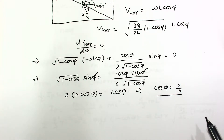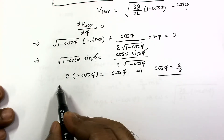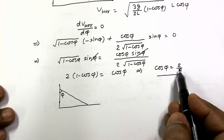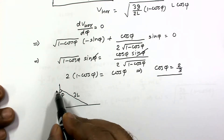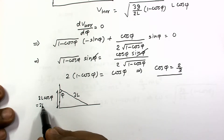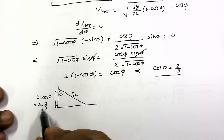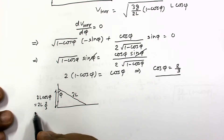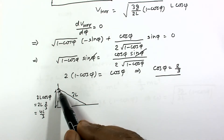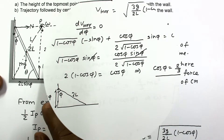So at the moment when the horizontal component of velocity is maximum, cos φ = 2/3. From the diagram, the height of the topmost point is 2L cos φ = 2L × (2/3) = 4L/3. This is the answer for the first part.